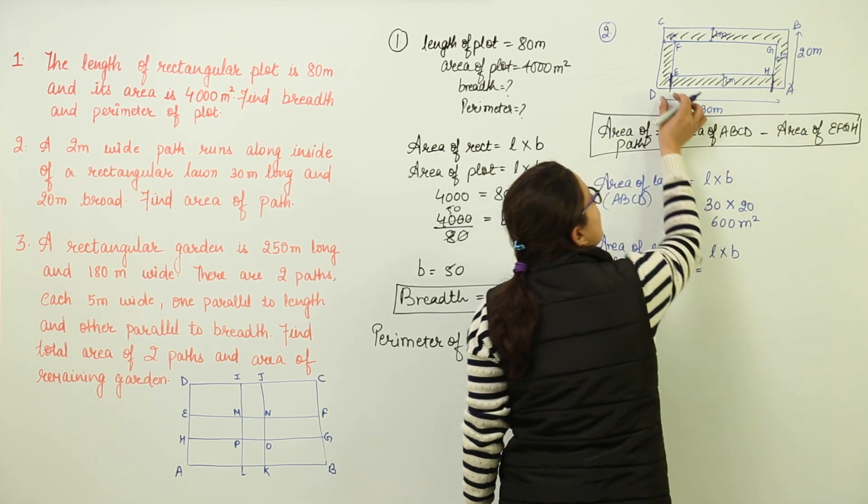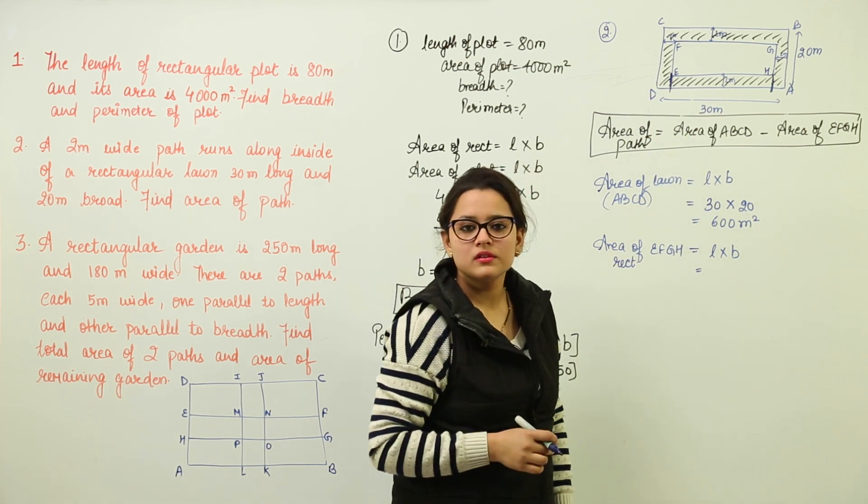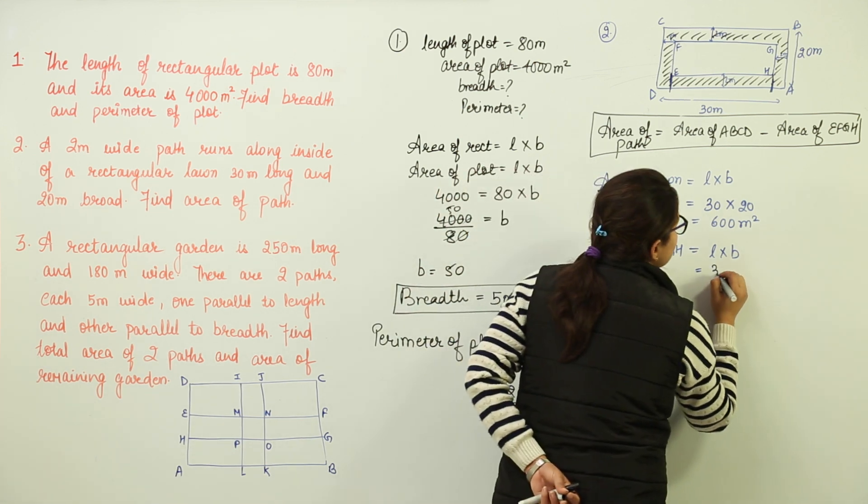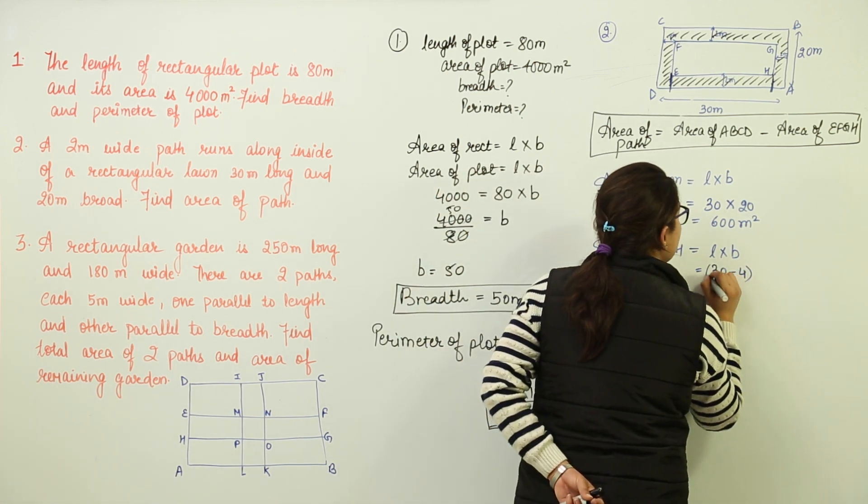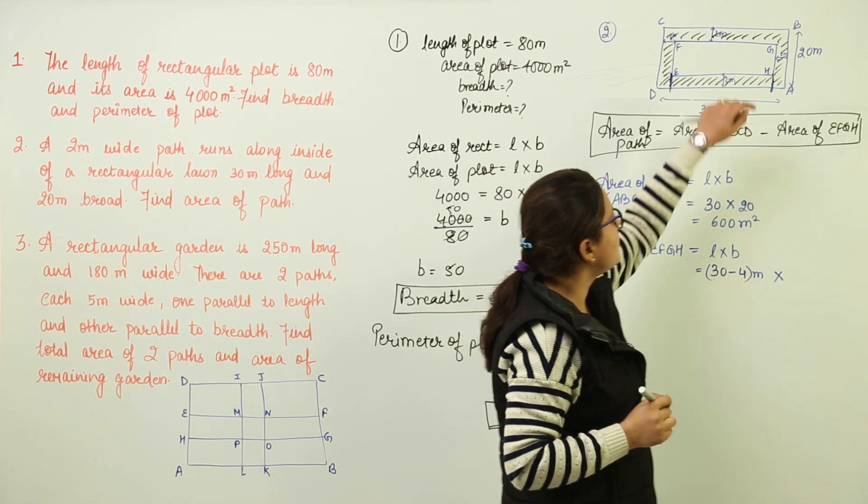And how much is this? This is 2 meters and this is 2 meters. So in total, how much are you going to deduct? You are going to deduct 4, right? So the length will be equal to 30 minus 4 meters. Similarly, we are going to calculate the breadth.